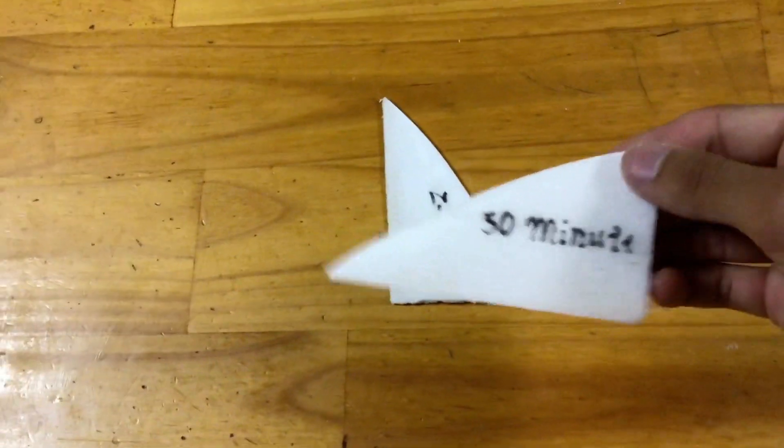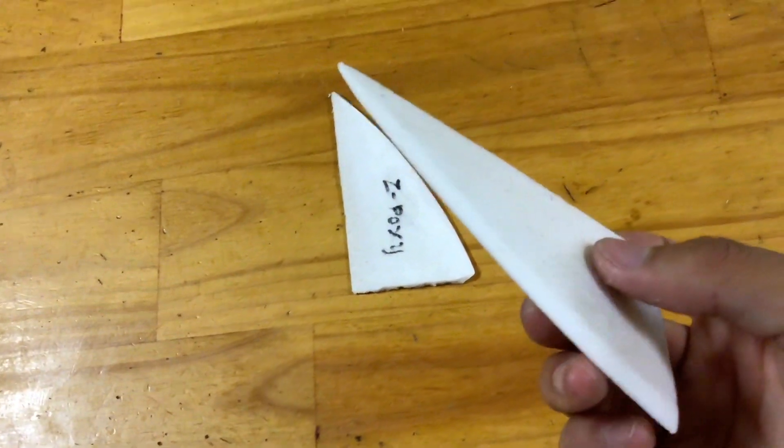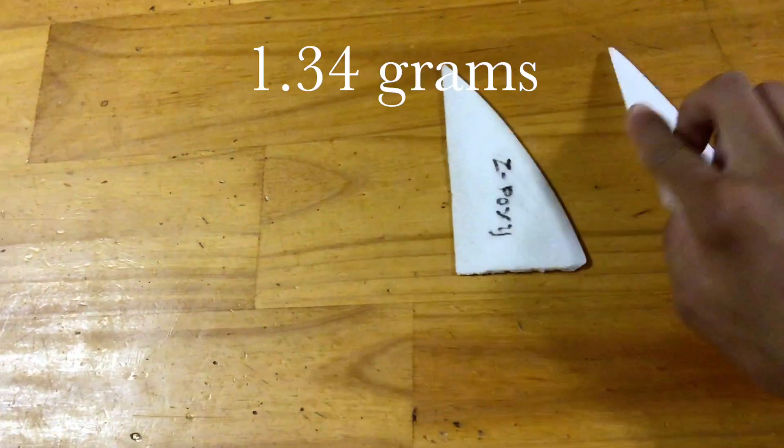As you can see, I've now covered both test wings with a coat of resin all the way around. This first one is covered with 30-minute epoxy from Tower Hobbies. The epoxy covering here weighed 1.34 grams.